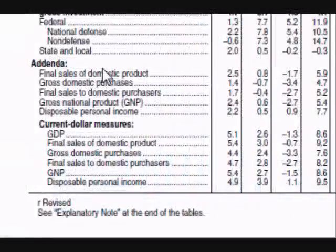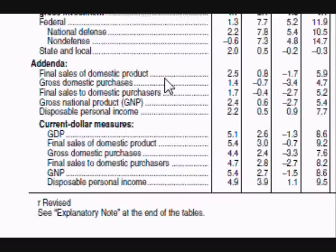There is also an agenda with many sections. The first section is the final sales of domestic product. Because the GDP total includes goods that were produced and then placed into inventories, this section looks at just the total goods and services that were sold — including both goods and services sold in the US as well as exported out of the US.